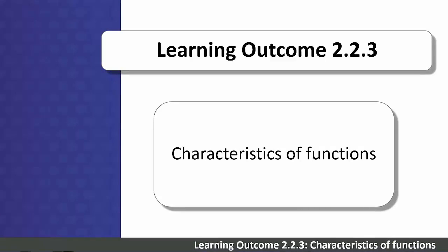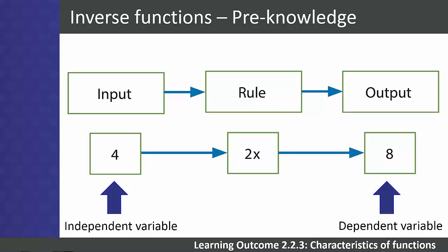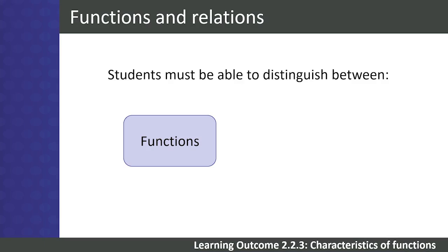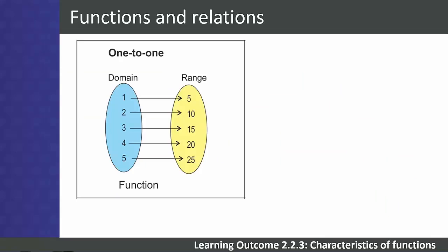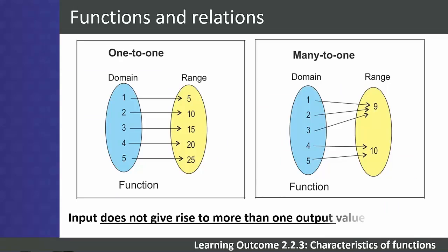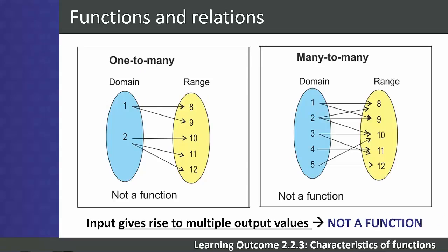We begin by revising the characteristics of functions, even though Learning Outcome 2.2.3 appears later in the subject guidelines. A relation is a mapping from one set of numbers to another, relating an independent variable x to a dependent variable y. A function is a special kind of relation where the rule results in unique values of y. Functions can be one-to-one or many-to-one. If an input gives rise to multiple output values, it is a relation, not a function.